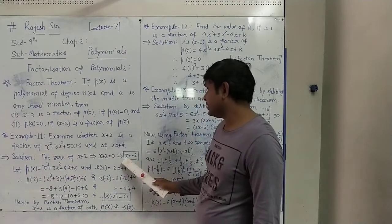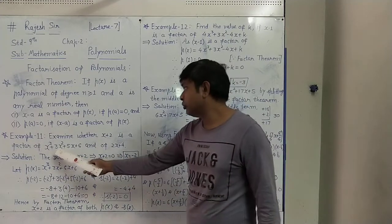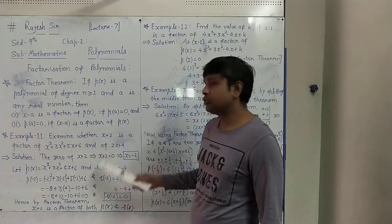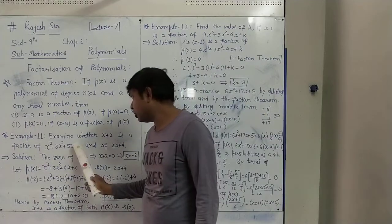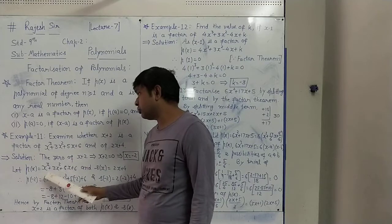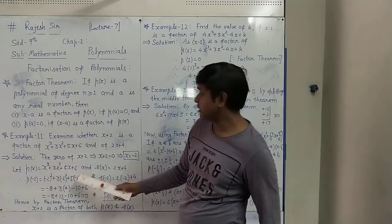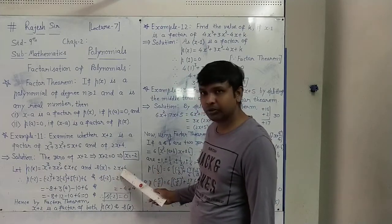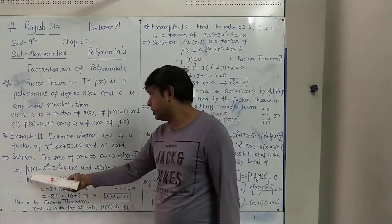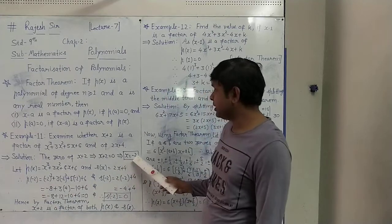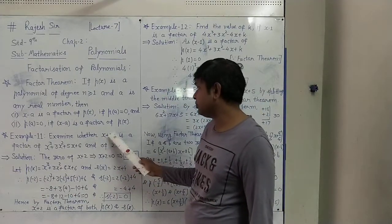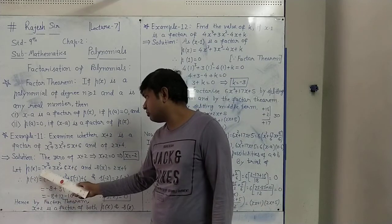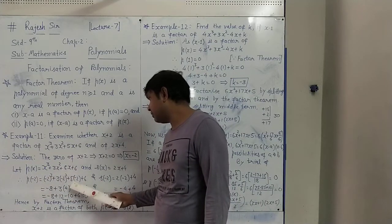So this minus 2 value of x we have to replace in both polynomials to check whether x plus 2 is a factor or not. We consider the first polynomial as P(x) equals x cubed plus 3x squared plus 5x plus 6, and the second polynomial as S(x) equals 2x plus 4. Now x is replaced by minus 2: minus 2 cubed plus 3 times minus 2 squared plus 5 times minus 2 plus 6.